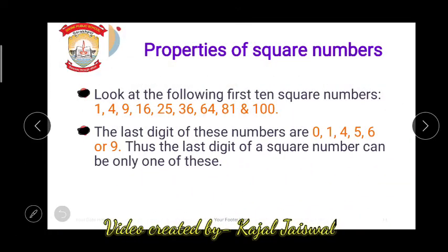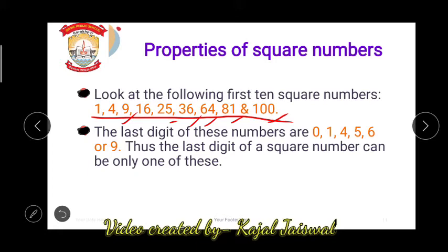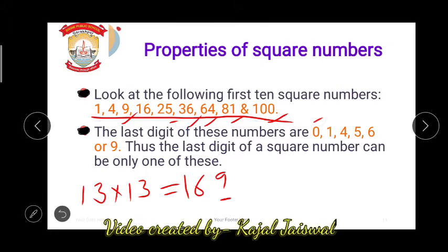The first 10 square numbers are 1, 4, 9, 16, 25, 36, 64, 81, and 100. Observe that the last digit is either 0, 1, 4, 5, 6, or 9 — only these numbers appear at the last position. No matter how big the square number is — for example, 13 into 13 is 169 — the last digit is 9. So the last digit of square numbers will always be 0, 1, 4, 5, 6, or 9.